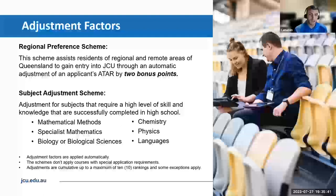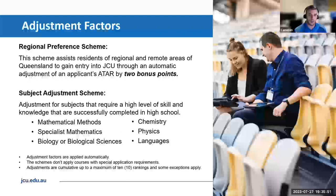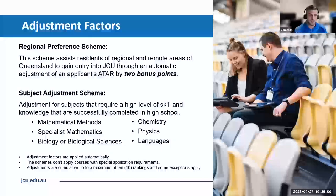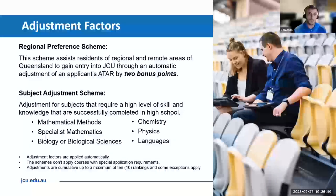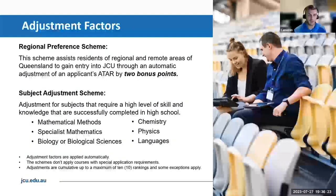Our adjustment factors. We've got two in this category. One is the regional preference scheme — depending on the location you live in, we will automatically award you two bonus points towards your ATAR for an application here at JCU. Then our subject adjustment scheme — for six listed subjects, if you do a higher level subject like maths methods, languages, or specialist maths, we'll award you two bonus points for those subjects. Fine print: you can only have a maximum of 10 bonus points per application, and not all courses will admit 10.